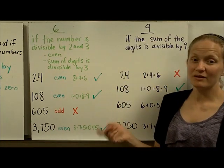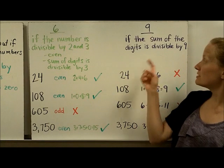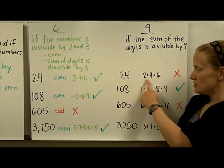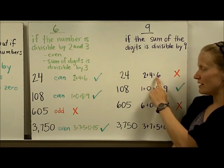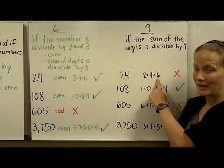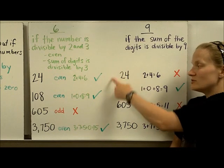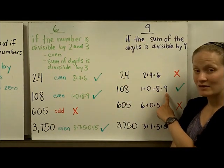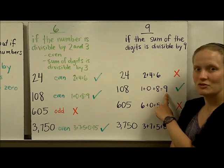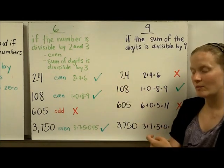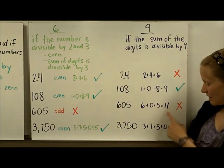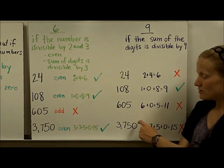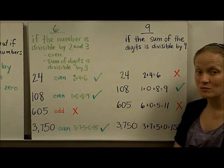For 9, the rule is a lot like the 3s rule, except the sum of the digits needs to be divisible by 9. Adding the digits of 24 gives 6, which is not divisible by 9, so 24 is not divisible by 9. For the next number, the digit sum is 9, and since 9 is divisible by 9, that whole number is divisible by 9. For 605 and 3,750, the digit sums are 11 and 15 — neither is a multiple of 9 — so those two numbers are not divisible by 9.